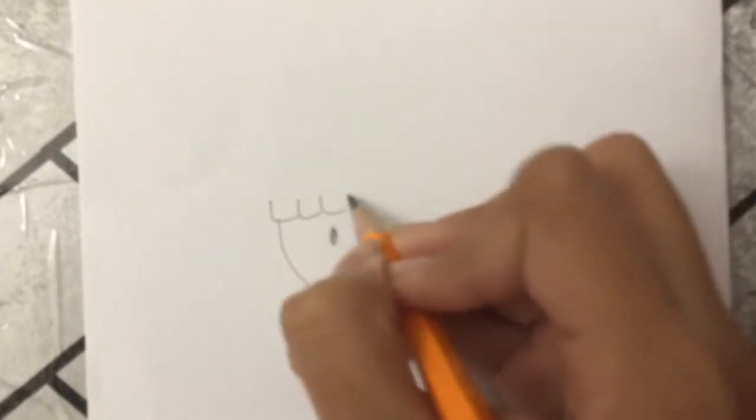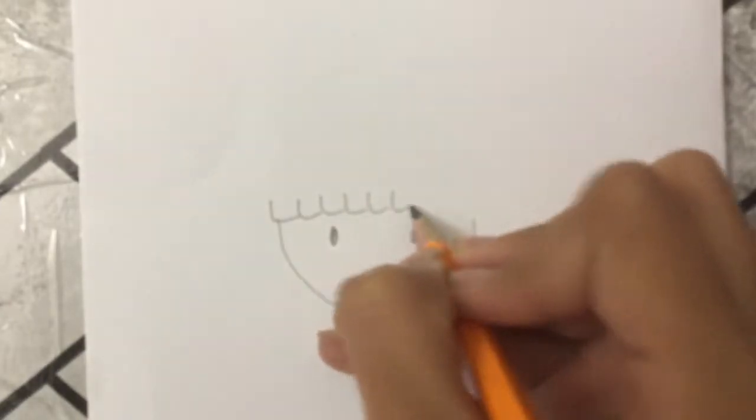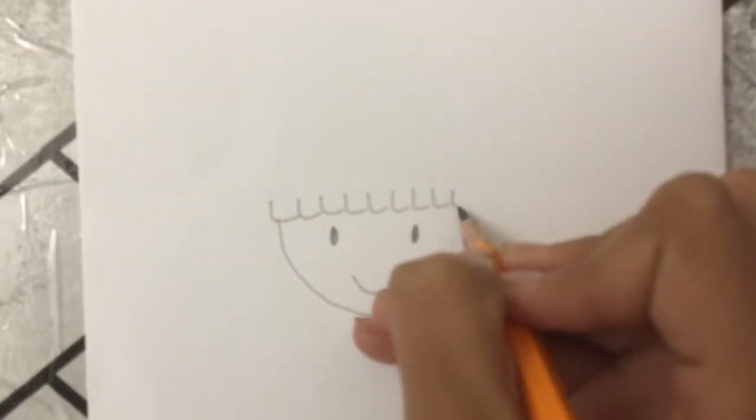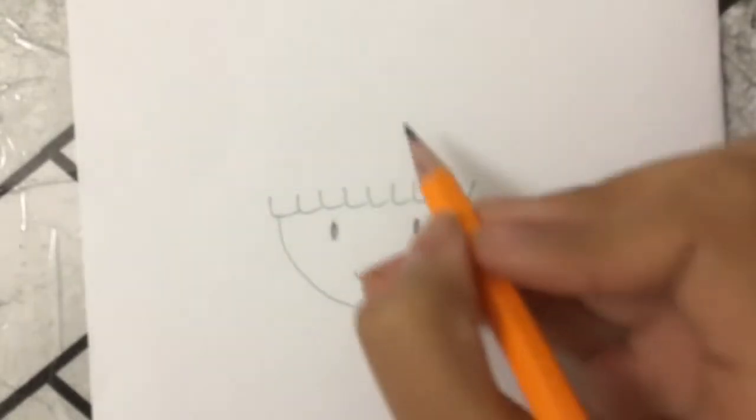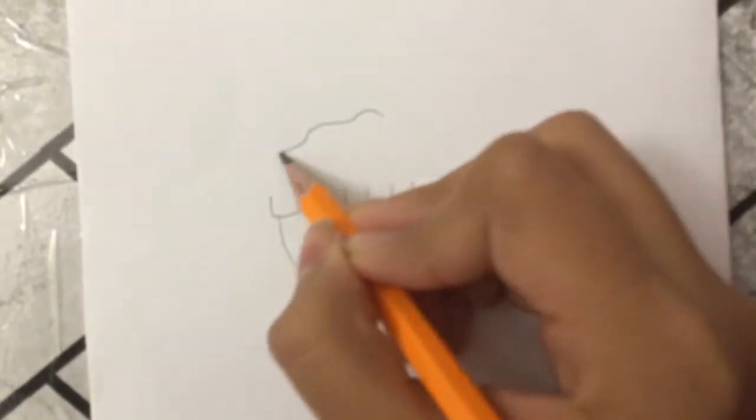For her hair, I'm going to draw the letter L like this until the end, and then I'm going to go up and draw squiggly lines for her hair.